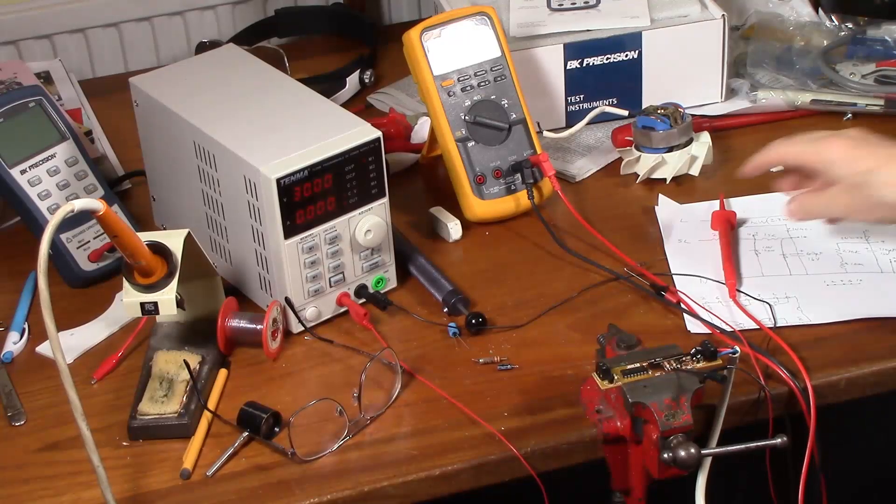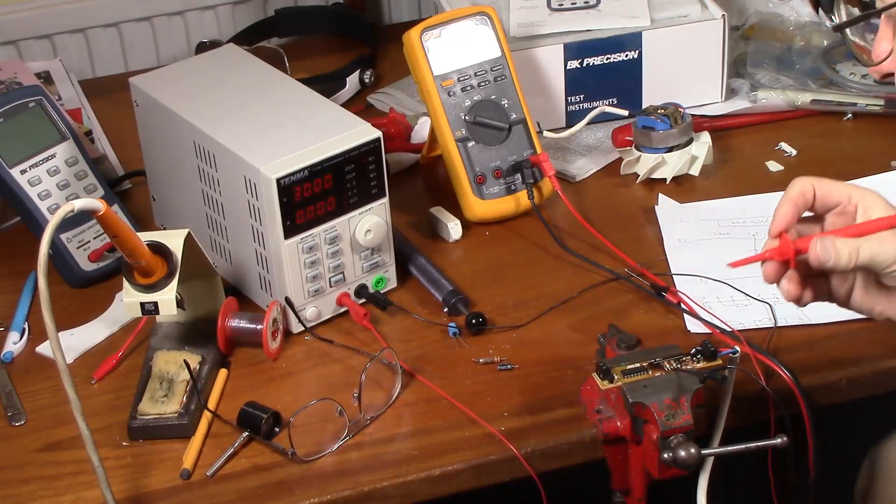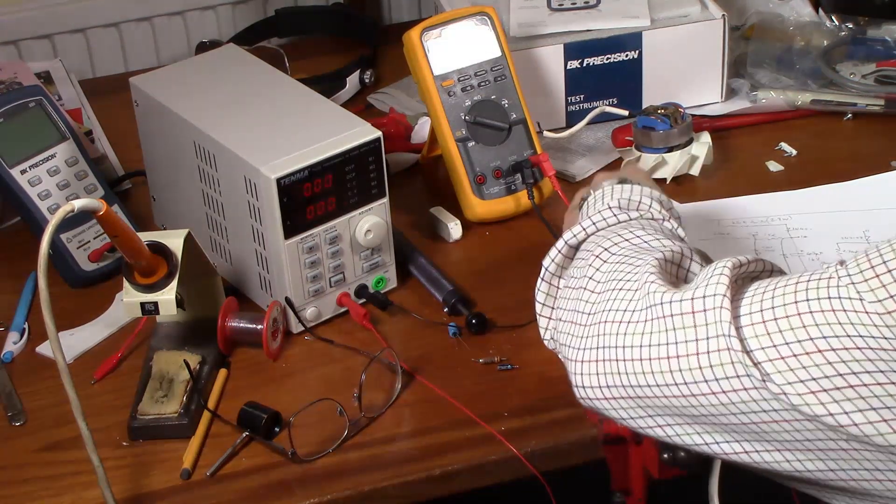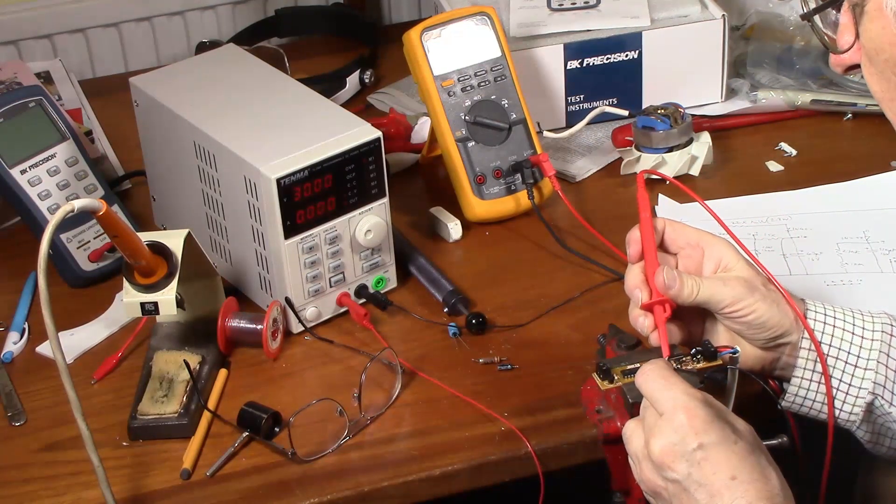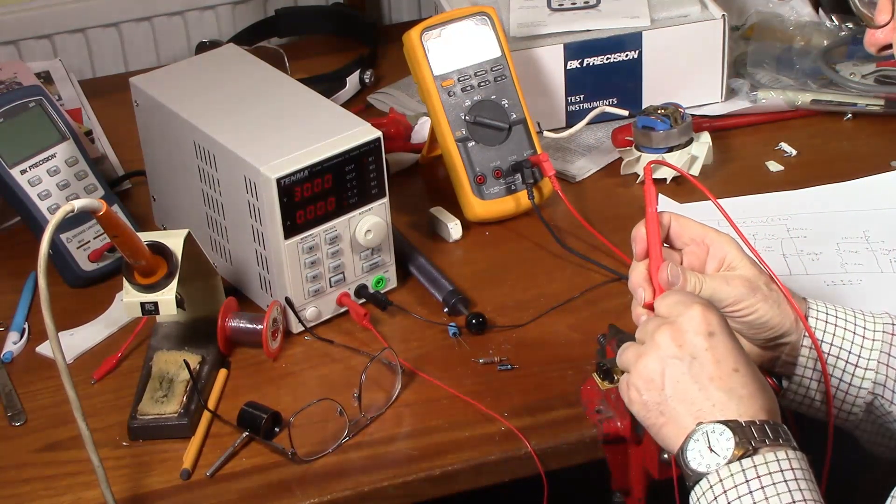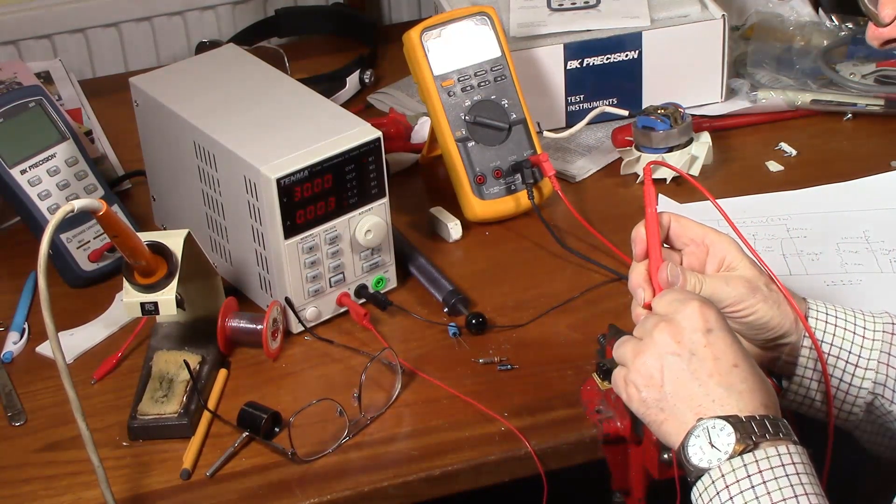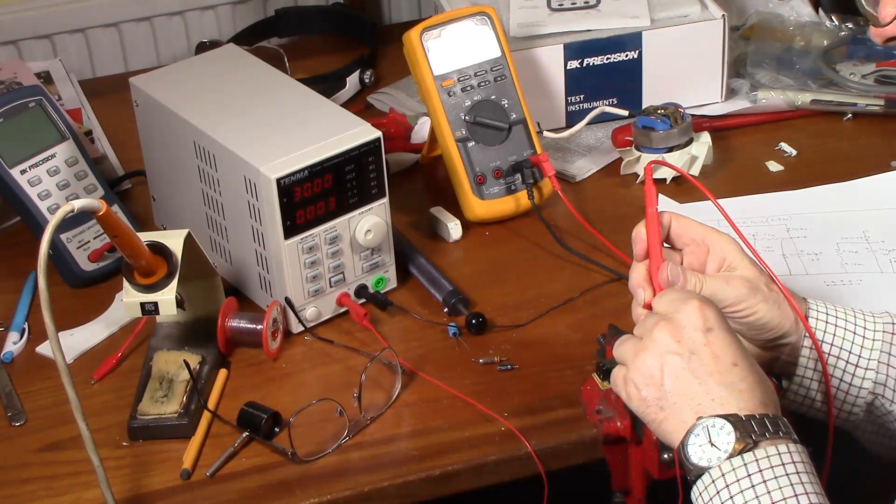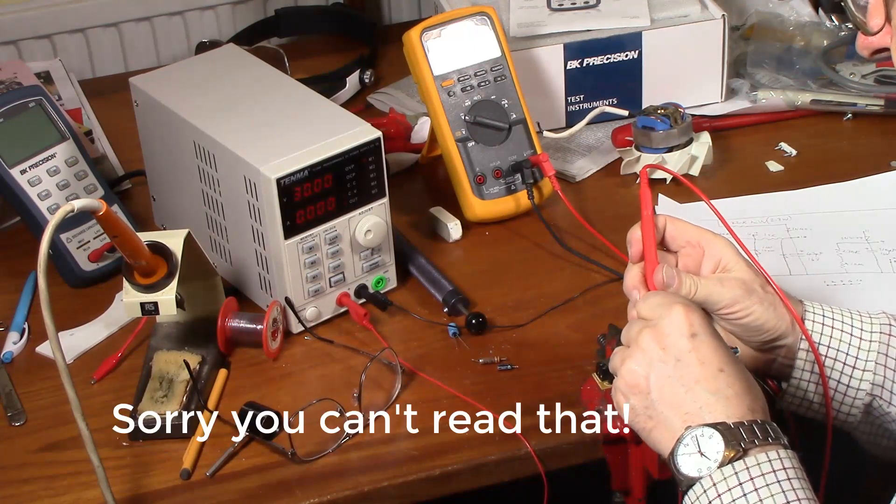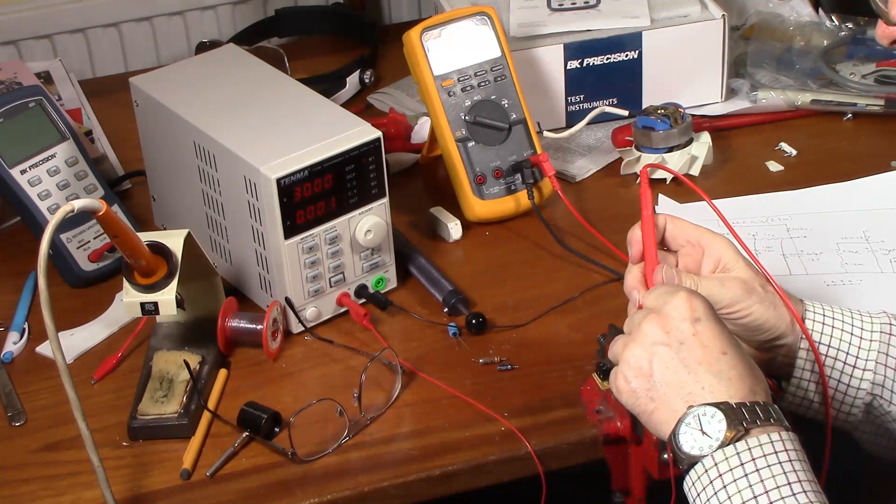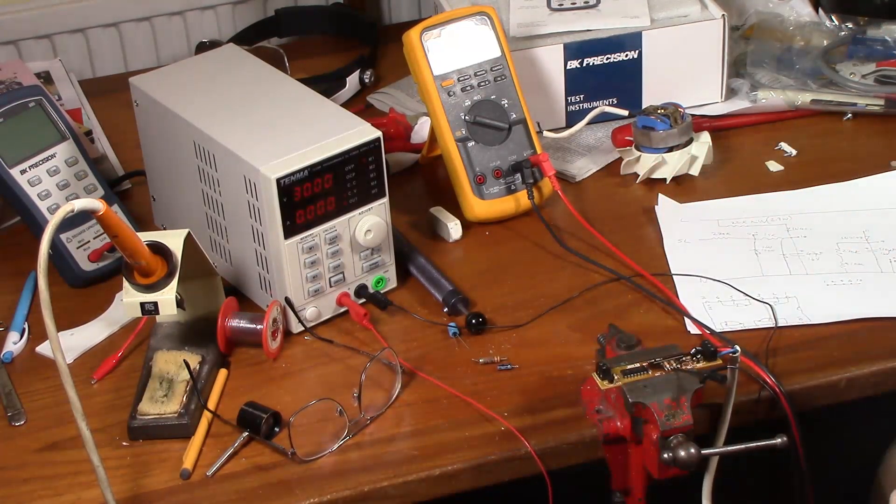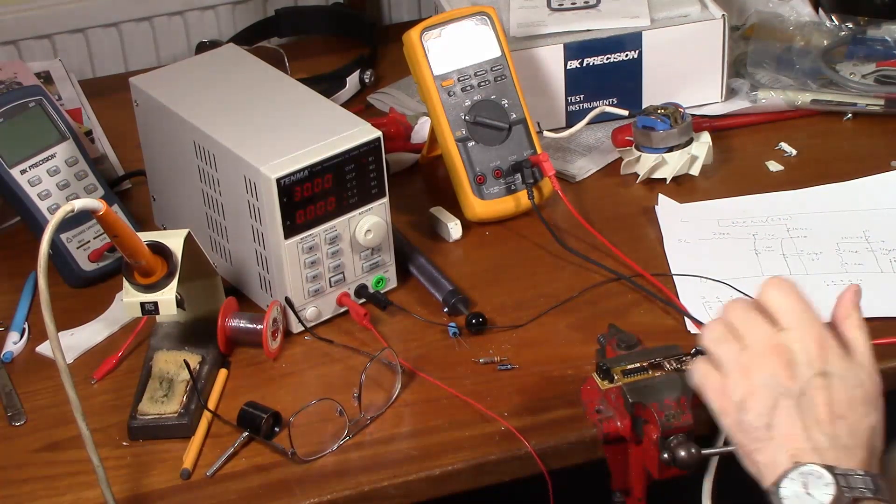I think there are two zener diodes in here. But I can't actually read the type code. So I think there should be something less than 16 volts. So I'm just testing them. That's 14.6 volts. And this one is 14.7. Right. So those little red ones are Zeners.